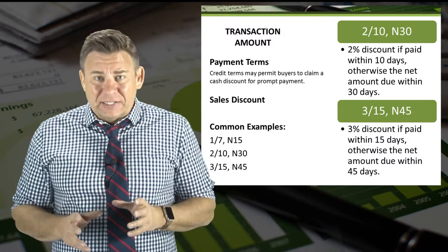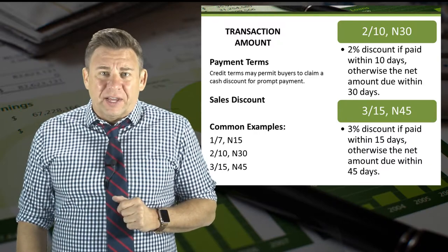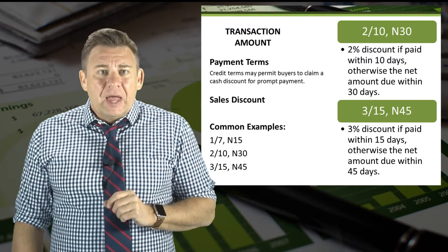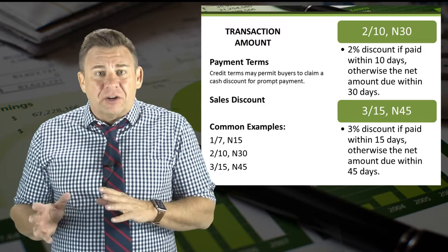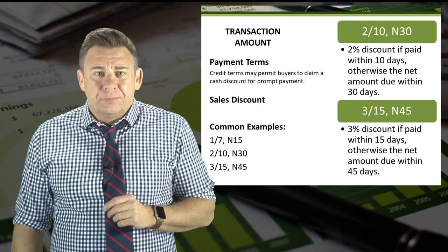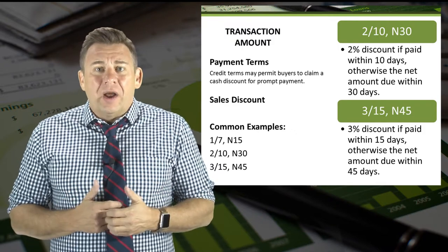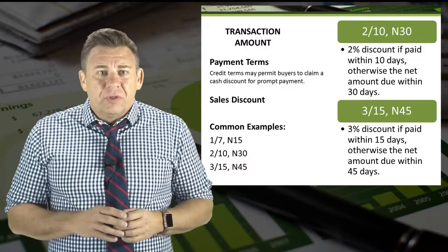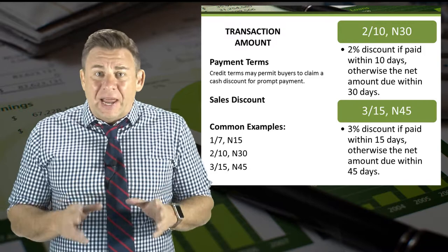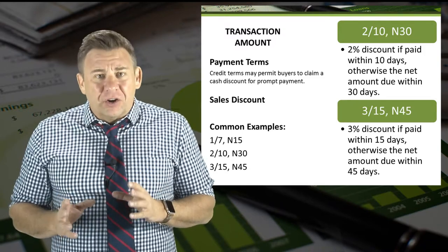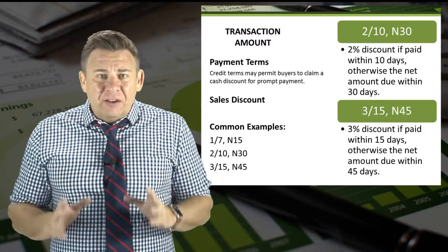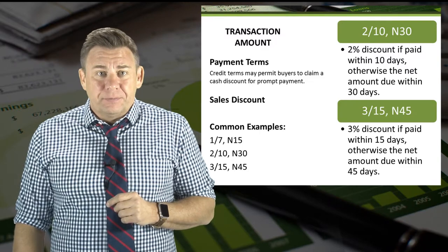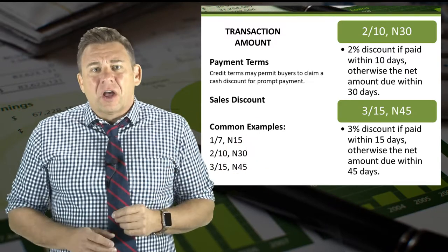In order to understand the impact of the new revenue recognition standard, we need to first understand what a sales discount is. Many firms offer sales discounts to buyers to encourage buyers to pay early. This is a very common practice and one that many buyers take advantage of. The terms are written as shown here. The first one reads 2/10 net 30, which means the buyer can take a 2% discount if the invoice is paid within 10 days; otherwise, the balance is due in 30 days. You can see on the slide some other common types of discounts.